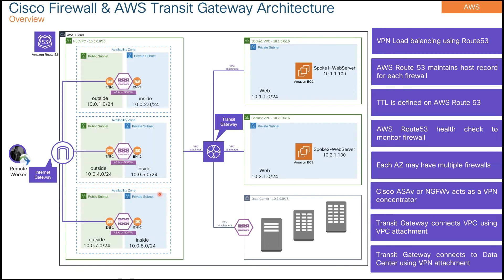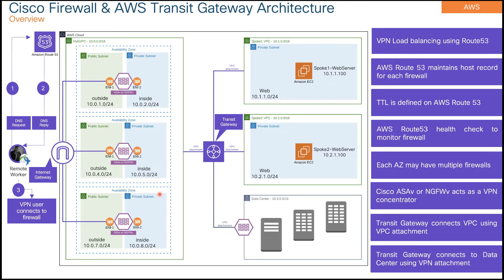Route 53 provides DNS-based load balancing. My user sends a DNS request, and based on the reply, the VPN user connects directly to a firewall. They can be given the IP address of any of the firewalls available in the Route 53 host records. I'll register a domain in Route 53, add a host record, and specify the IPs of my firewalls. I'll explain in detail how we do that on the next slide.